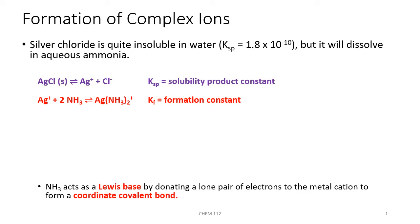We can write the equilibrium expression for silver chloride: it will dissociate into silver ions and chloride anions, and the Ksp is the solubility product constant for that dissociation. If we have silver ions in solution and we add ammonia, those silver ions will react with the ammonia, forming a silver-ammonia complex ion. We can look up a K sub F — the formation constant — from a chart that also lists instability constants.